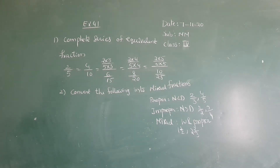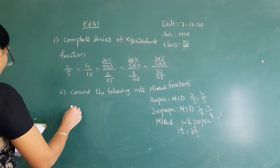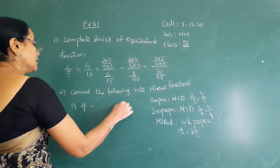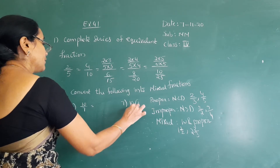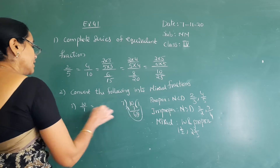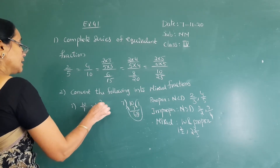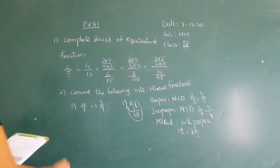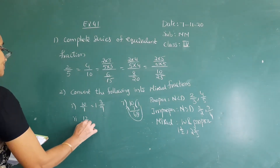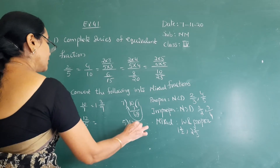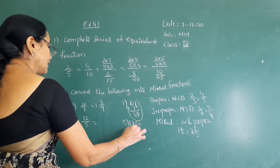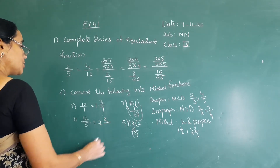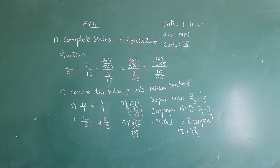The question is to convert the given improper fraction into a mixed fraction. First: 10 by 7. Divide 10 by 7: 7 ones are 7, remainder 3. So the whole part is 1, the remainder is the numerator, and the divisor is the denominator. Next: 12 by 5. Divide 12 by 5: 5 twos are 10, remainder is 2. Whole part is 2, numerator is 2.